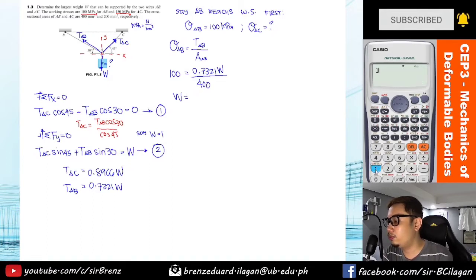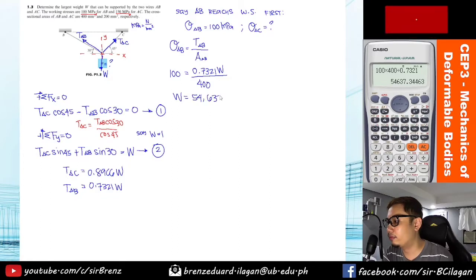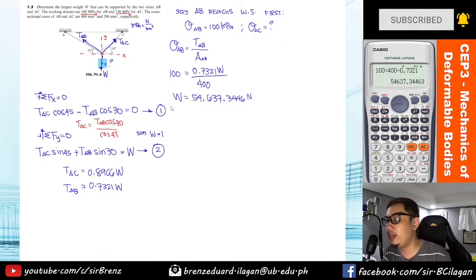So what will be the value of W? So 100 times 400 divided by 0.7321, so that is 54,637.3446 Newtons. So guys, we have W, but that doesn't mean that's the correct answer. Again, we need to check first if the case is...